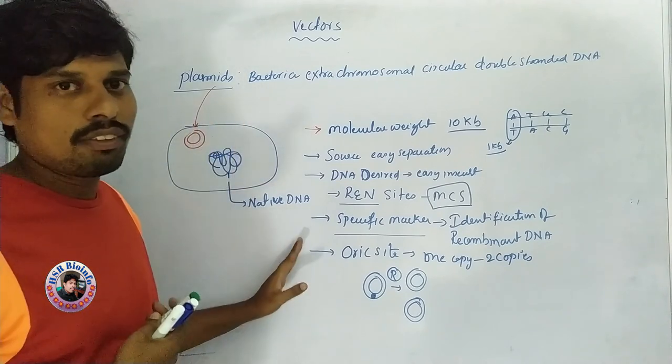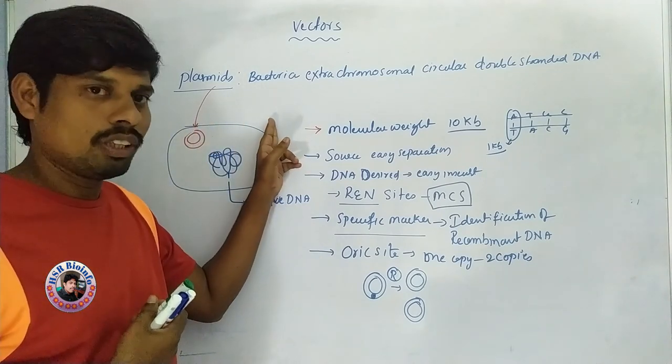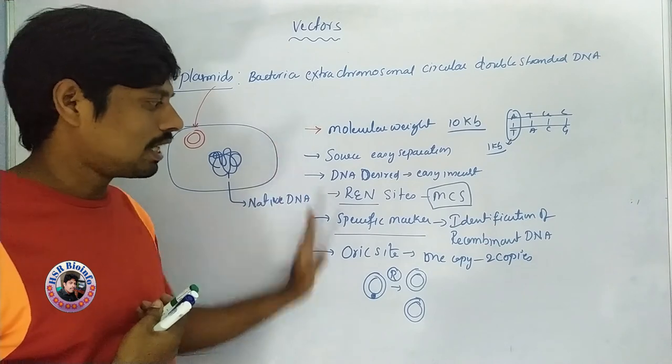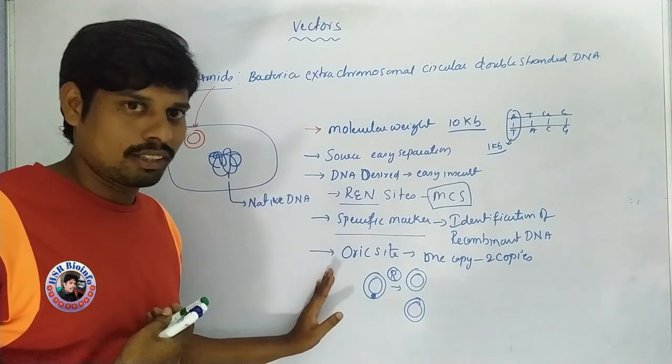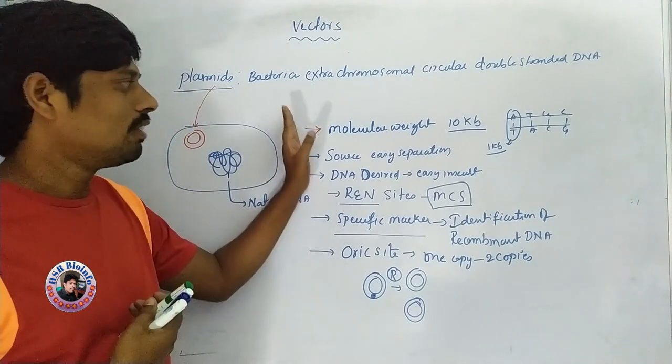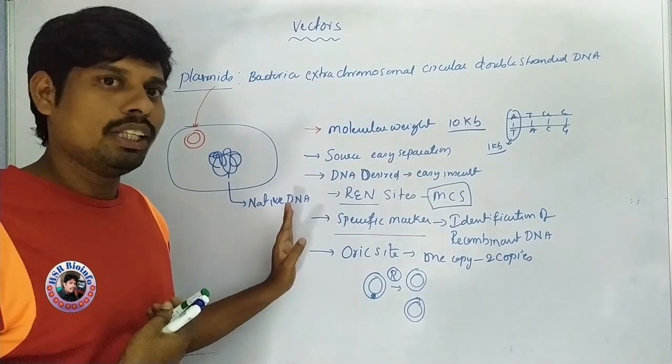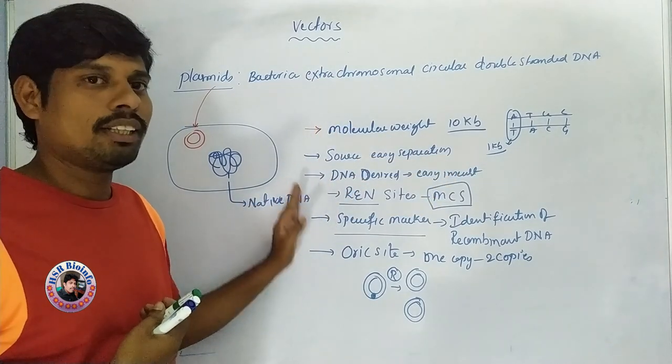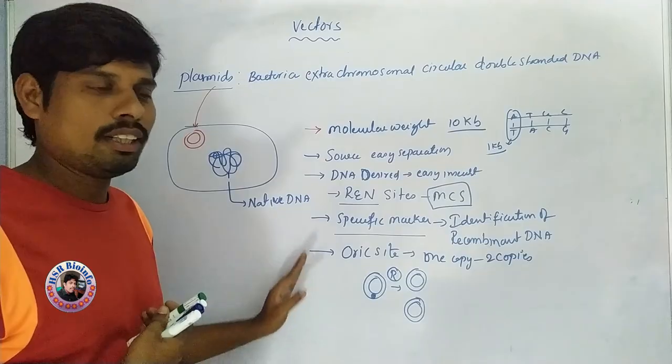Examples of plasmids include PBR322 and PUC19. These are common plasmid vectors used in molecular biology.